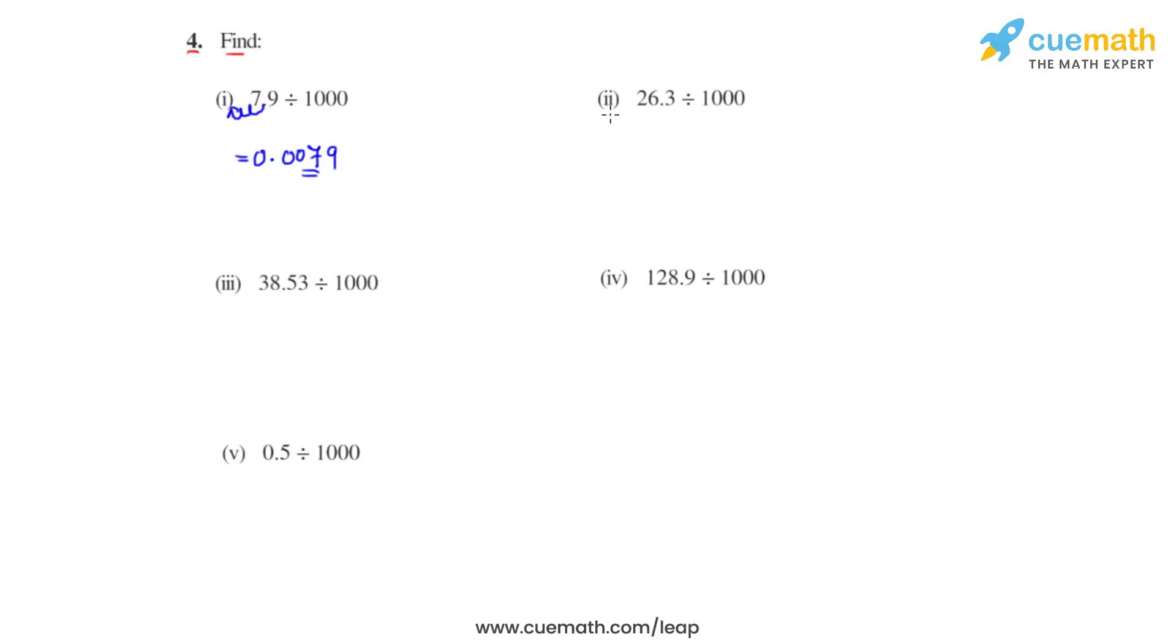Coming to the second bit where we have 26.3 which is divided by 1000, we will be moving the decimal again 3 places towards right. So 1, 2, and 3, and the answer for this becomes 0.0263.